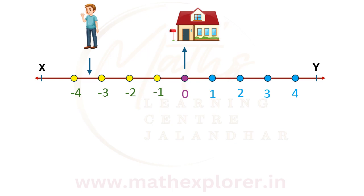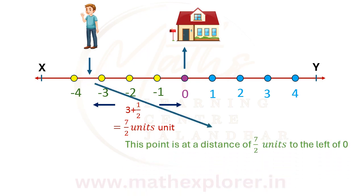We can see that the person has moved 3 complete units and then a half unit towards the left. So, the total distance traveled is 7 by 2 units towards the left. Let's explore which number represents the position of this person on the number line.